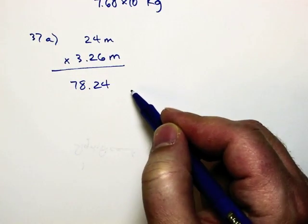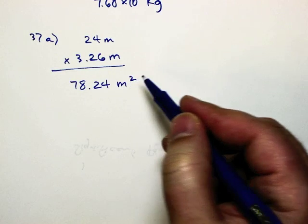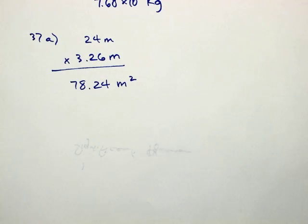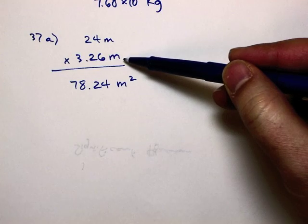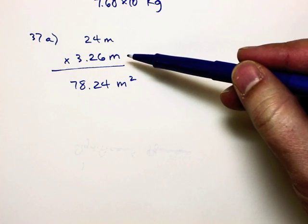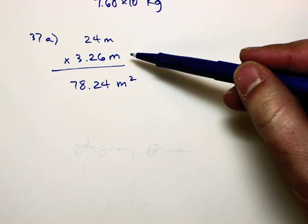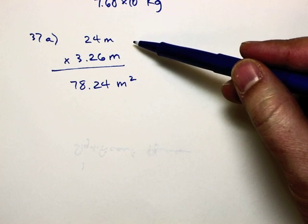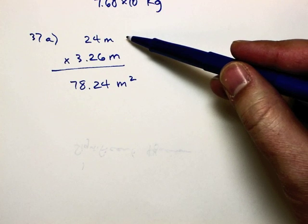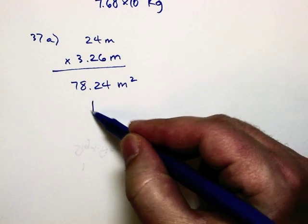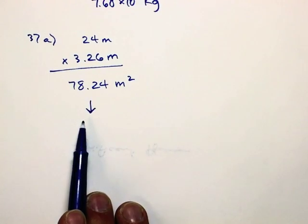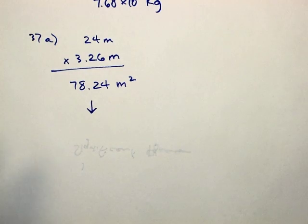What would be my unit on this? Meter squared. Now, the question is how we're going to base our answer. Of these two values, the top and the bottom, which one has the least amount of significant figures? The top. The top, 24. How many does it have? Two. Two. And because this one has two and this one has three, we're going to base the answer off the one with less, off the one with two.